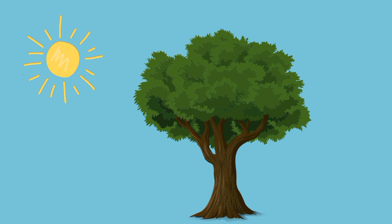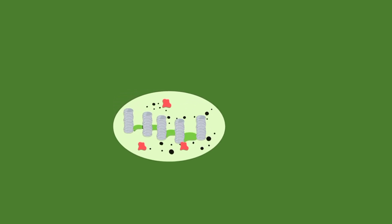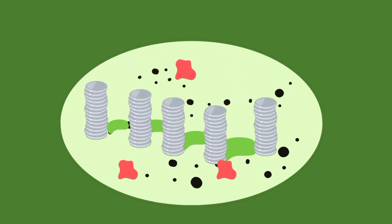The process of photosynthesis begins with the trapping of solar energy by chloroplast. Chloroplasts are a green-colored pigment present in leaves. Chloroplasts are double-layered organelles.